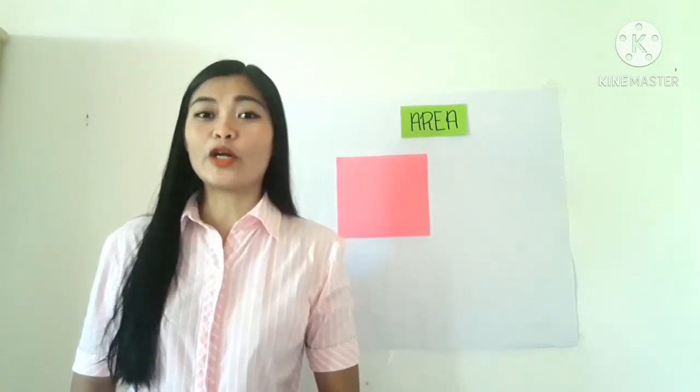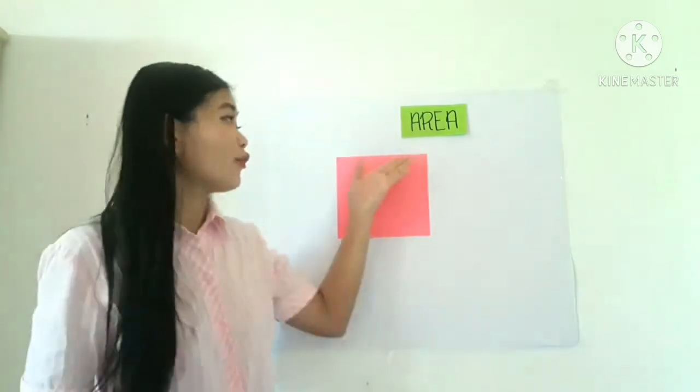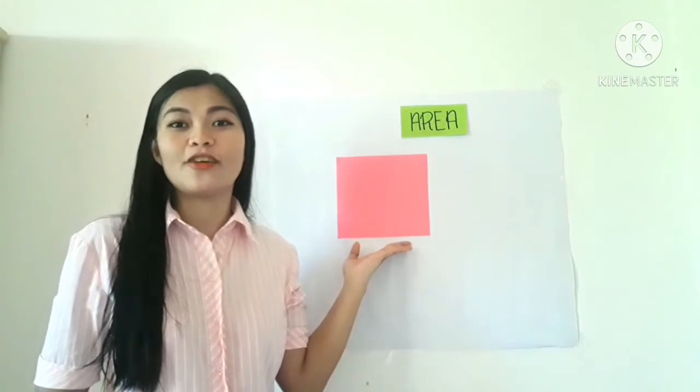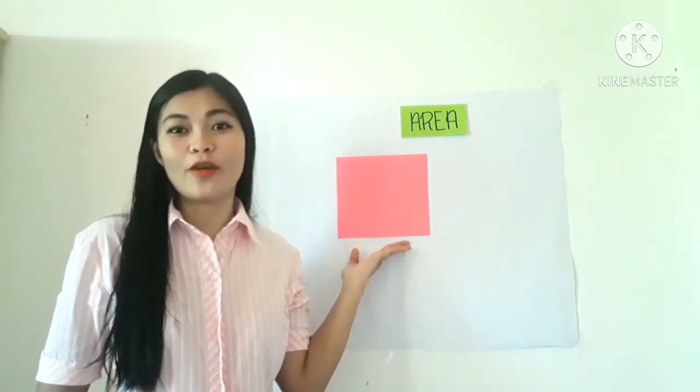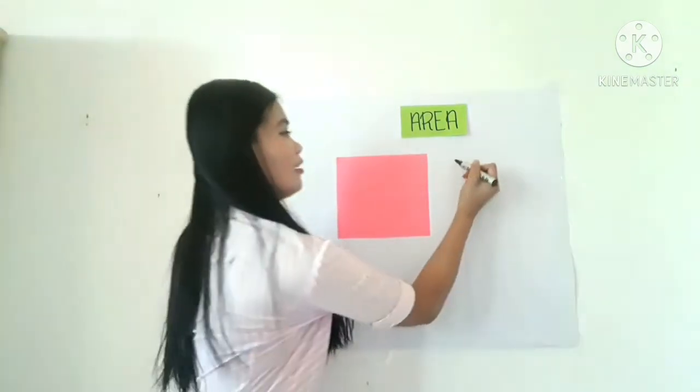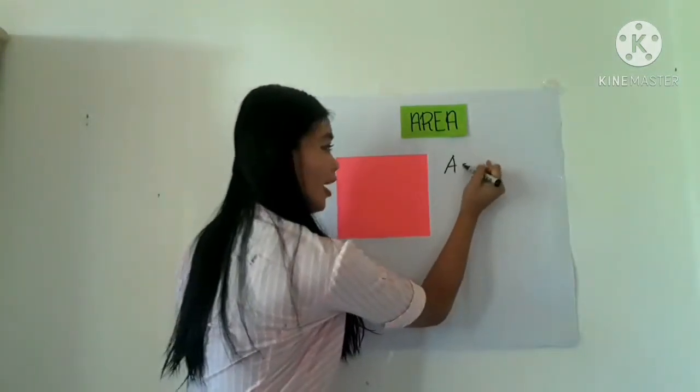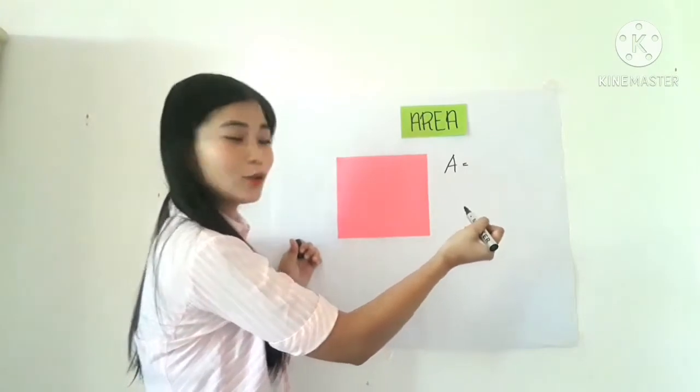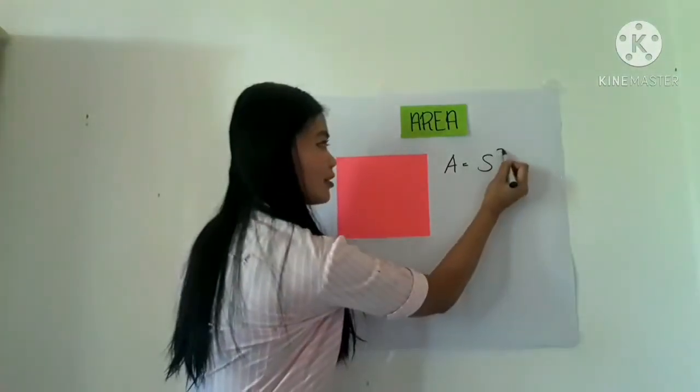Now we are going to estimate the area of this square using the formula of the square. So, the formula of the area of the square is area is equal to S squared.